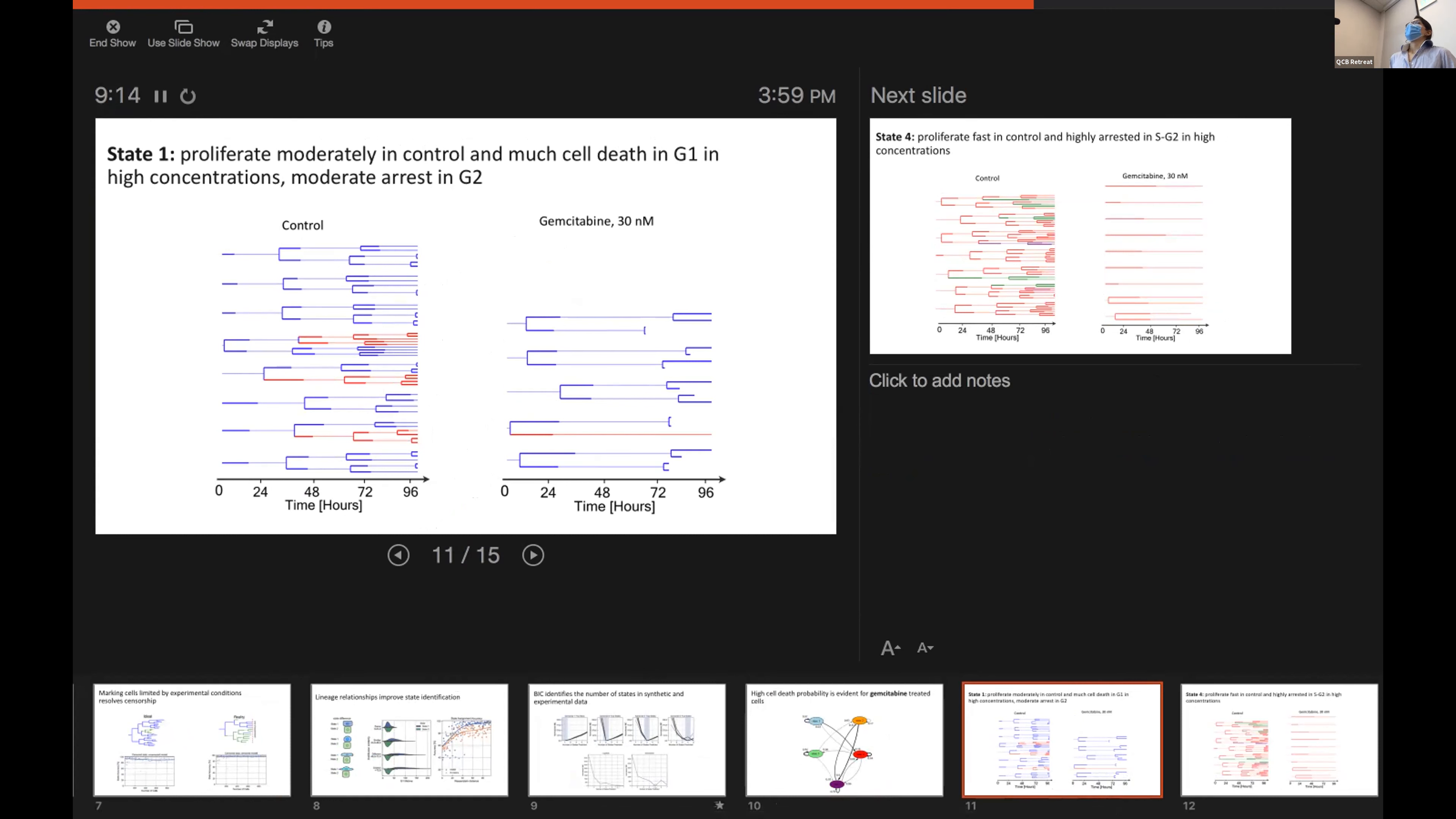For example, in state one, in control condition, we see that cells are moderately proliferating, but when you treat them with higher concentrations of gemcitabine, we see a lot of cell death in G1, which is shown as the thicker line, and G2 is shown on the thinner line. We see a lot of the G1 cell death and a lot of G2 arrest.